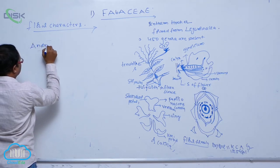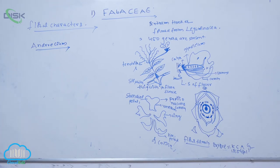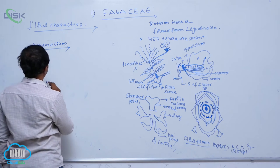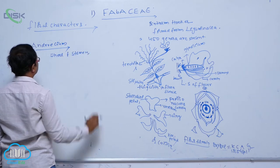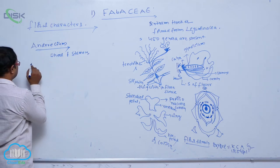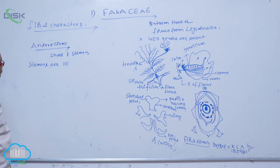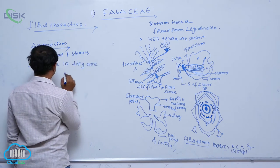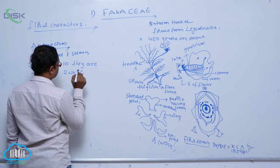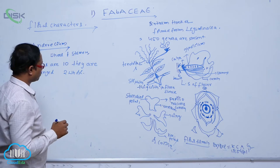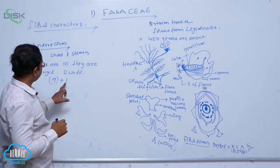Next is the androecium part. Generally, the whorl of stamens is known as androecium. In this, stamens are ten — they are arranged in two whorls. So total ten stamens due to two whorls means nine plus one. Nine stamens are fused into one bundle; the remaining one stamen is also considered as one bundle.